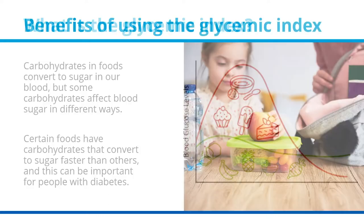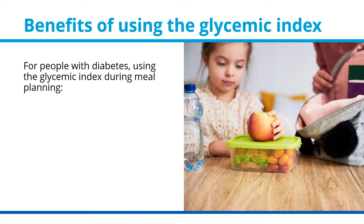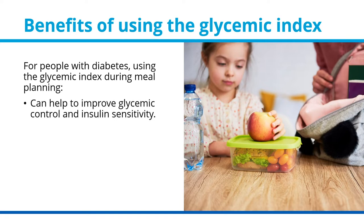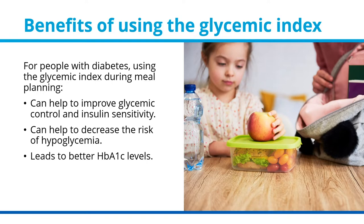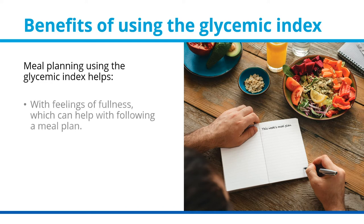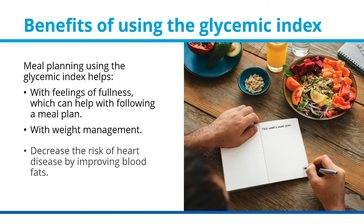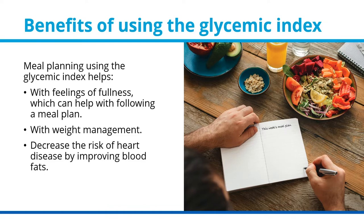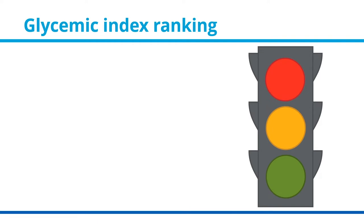Benefits of using the glycemic index: for people with diabetes, using the glycemic index during meal planning can help to improve glycemic control and insulin sensitivity, help to decrease the risk of hypoglycemia, and leads to better HbA1c levels. It also helps with feelings of fullness, which can support following a meal plan and weight management, and can help decrease the risk of heart disease by improving blood fats.